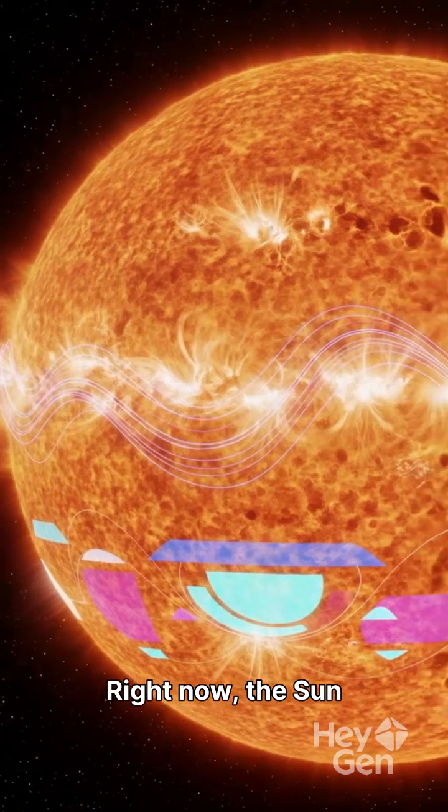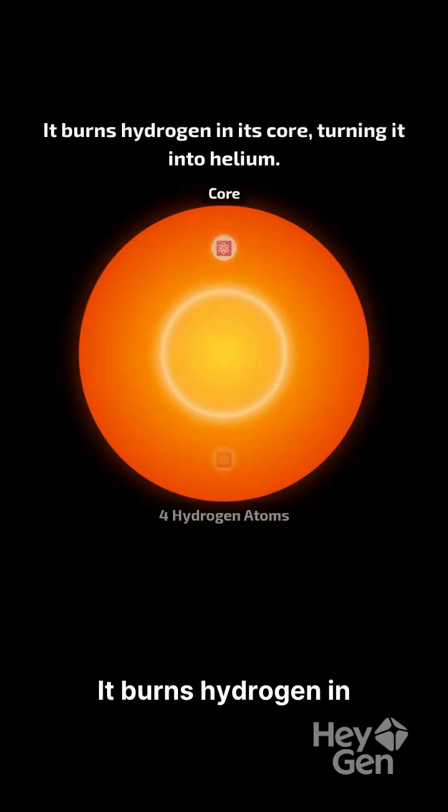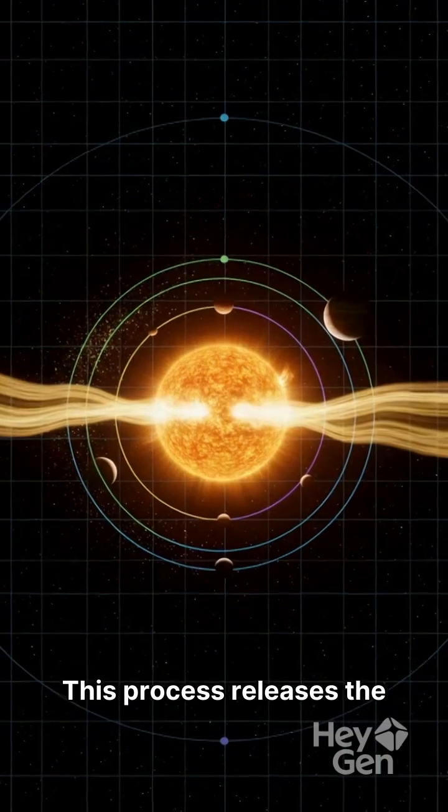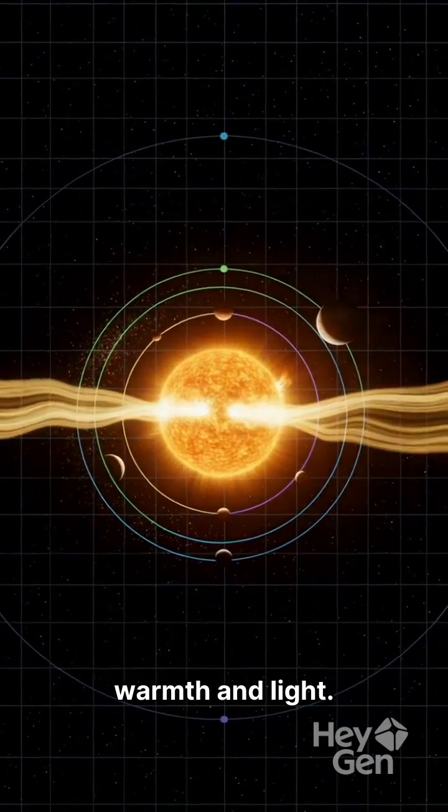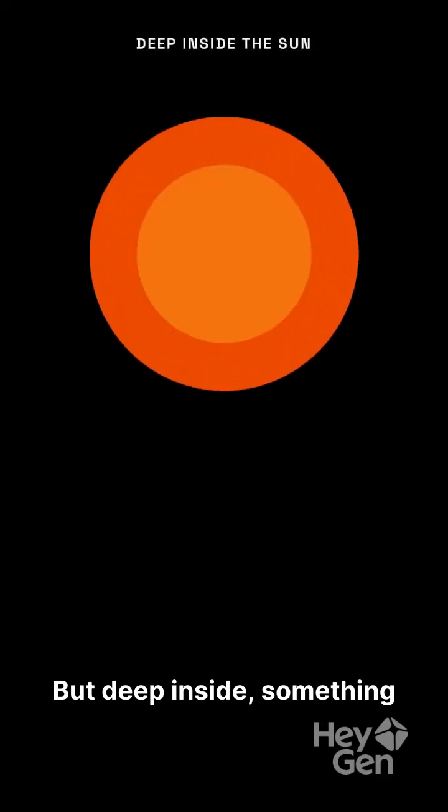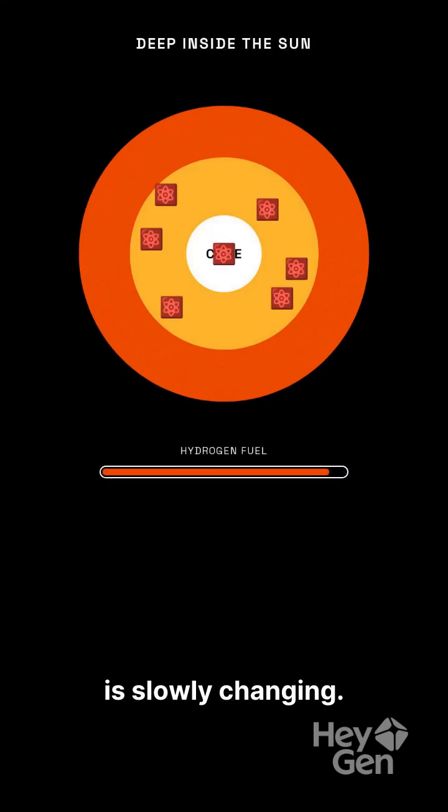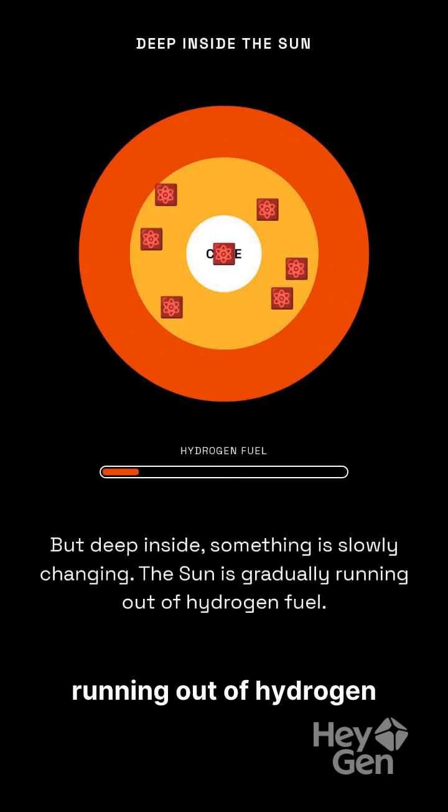Right now, the Sun is in the middle of its life cycle. It burns hydrogen in its core, turning it into helium. This process releases the energy that gives us warmth and light. But deep inside, something is slowly changing. The Sun is gradually running out of hydrogen fuel.